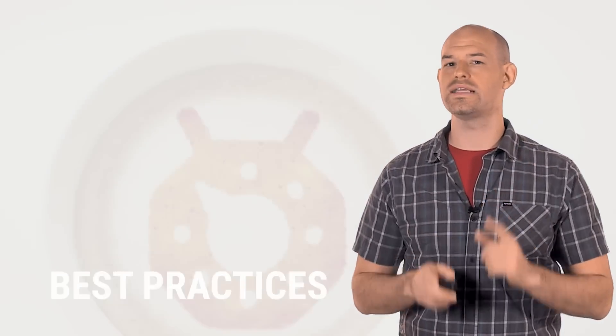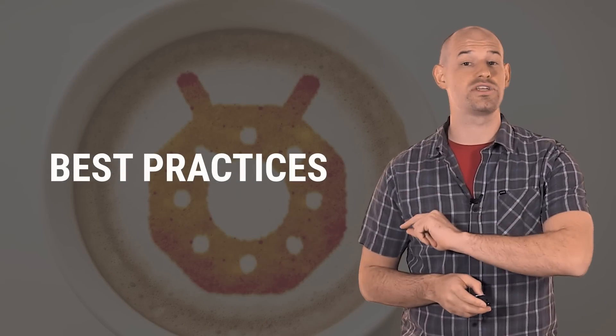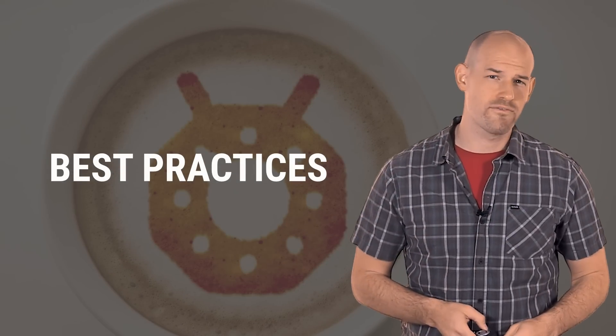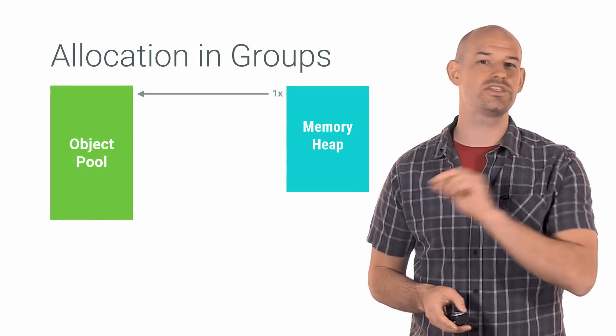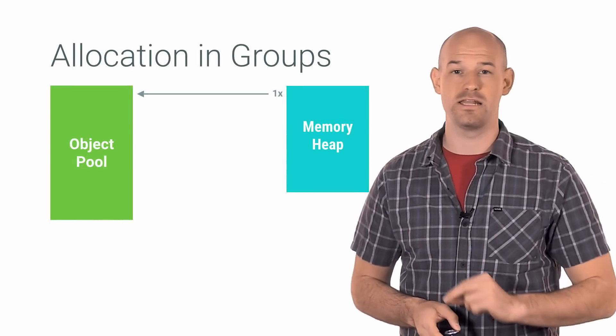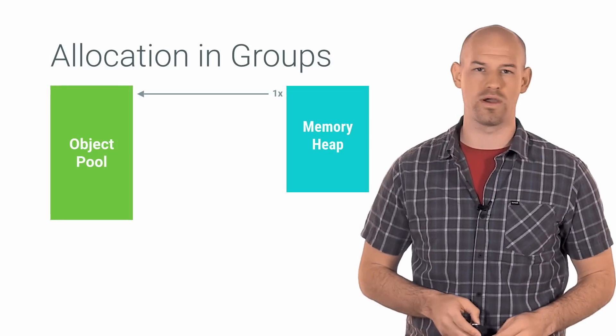But object pools are tricky to get right and have a handful of implementation caveats that you need to watch out for. Firstly, remember that there's an overhead involved each time the object pool needs to go back to the main heap to allocate memory. Now it may be small, but it's there and you should watch out for it.